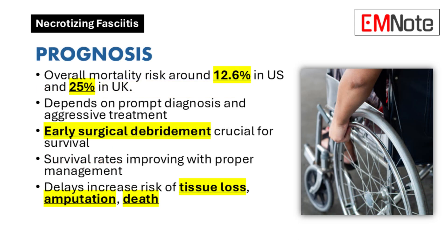The overall mortality risk is reported to be around 12.6% in the United States and 25% in the United Kingdom. The prognosis for individuals with necrotizing fasciitis depends heavily on prompt diagnosis and aggressive treatment. Delays in diagnosis and treatment significantly increase the risk of tissue loss, amputation, and death. Early surgical debridement is the most crucial factor affecting mortality. However, survival rates have improved with timely and appropriate management.